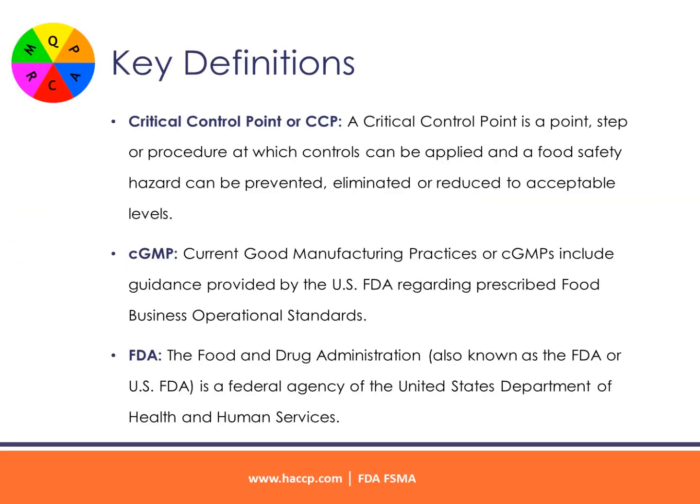FDA FSMA key definitions: Critical Control Point, or CCP — a critical control point is a point, step, or procedure at which controls can be applied and a food safety hazard can be prevented, eliminated, or reduced to acceptable levels. CGMP — current good manufacturing practices, or CGMPs, include guidance provided by the US FDA regarding prescribed food business operational standards.